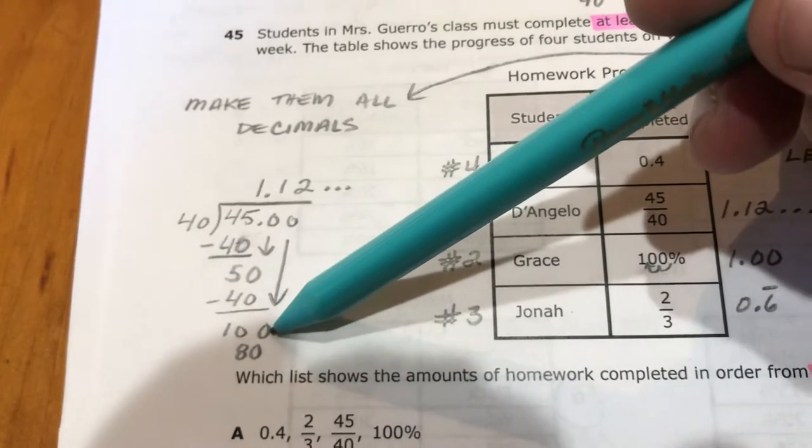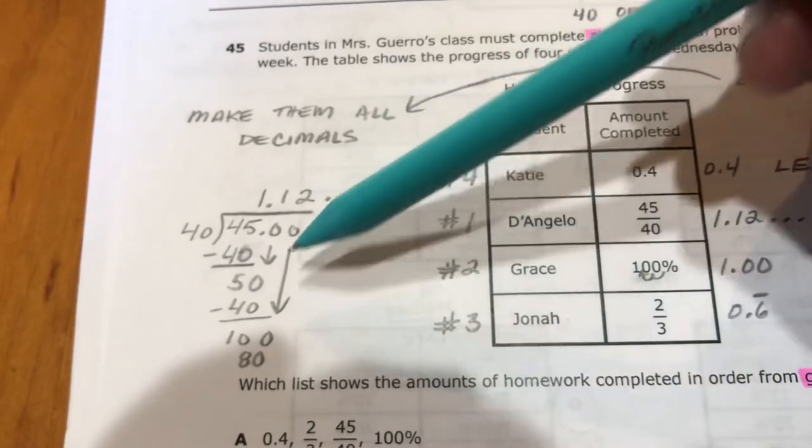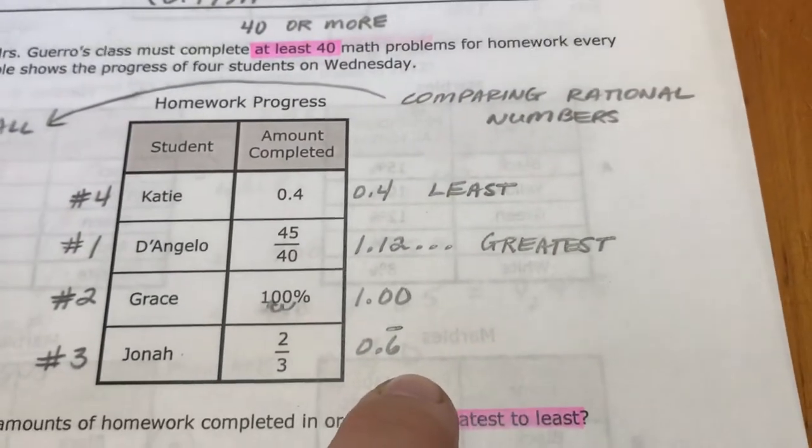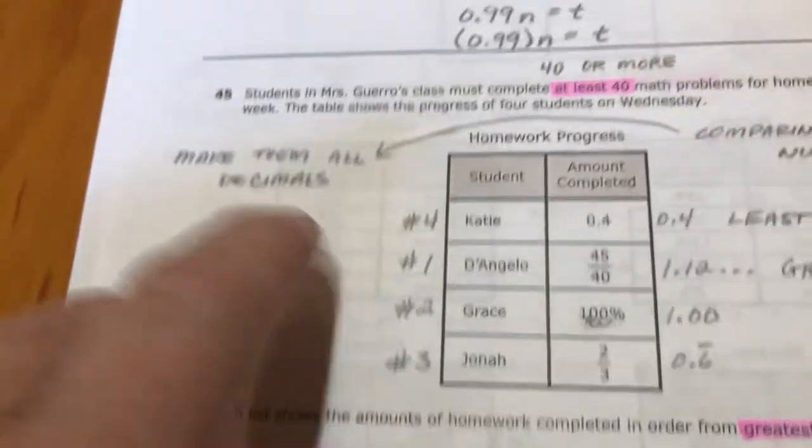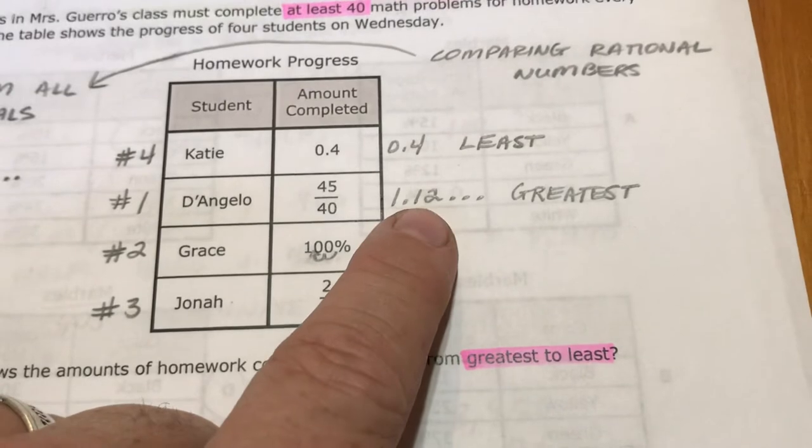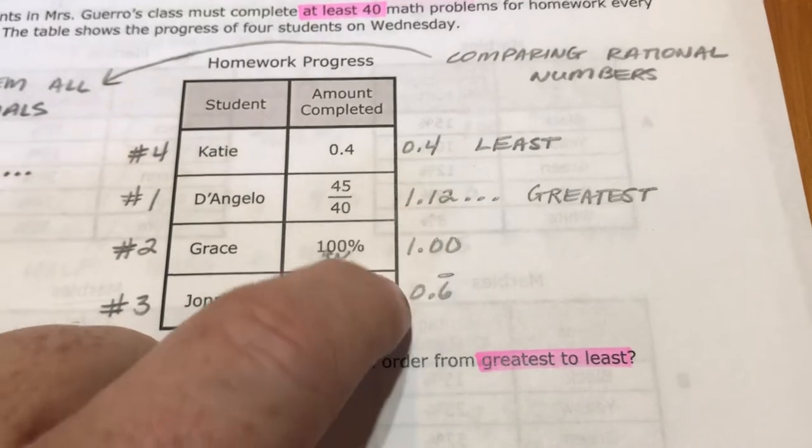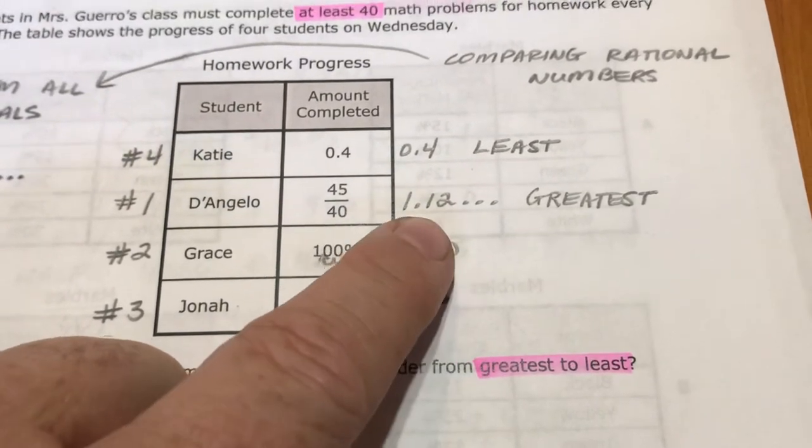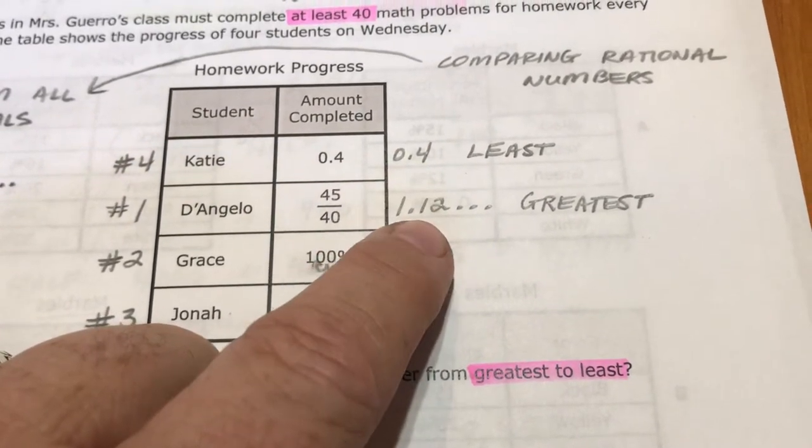I just divided it. 40 goes into 45 once, you subtract and get 5, bring down a zero. 40 goes into 50 once, subtract and get 10, bring down another zero, you get 100. 40 goes into 100 two times, and that's 80. And you can see that I stopped, I did not continue my division because it didn't matter. All I needed to do was compare these to a few decimal places. I did not need to keep going with my division.